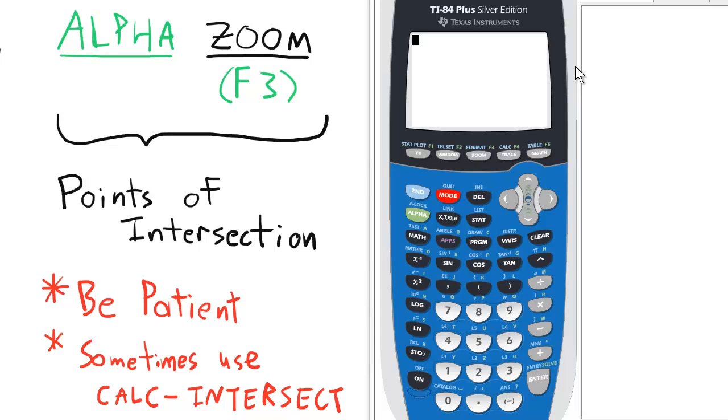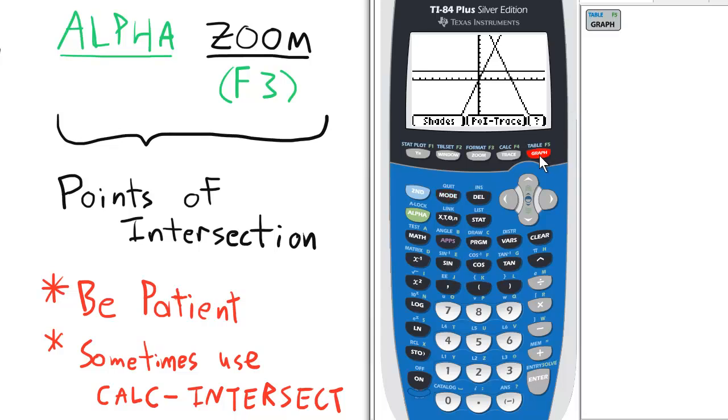To find the points of intersection of these functions, press GRAPH. Notice the selections at the bottom of the screen. These are accessed by pressing the F1 through F5 keys.